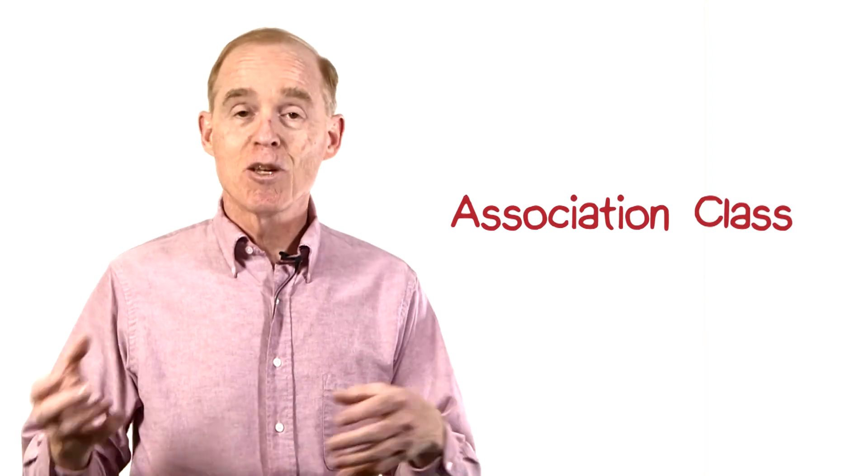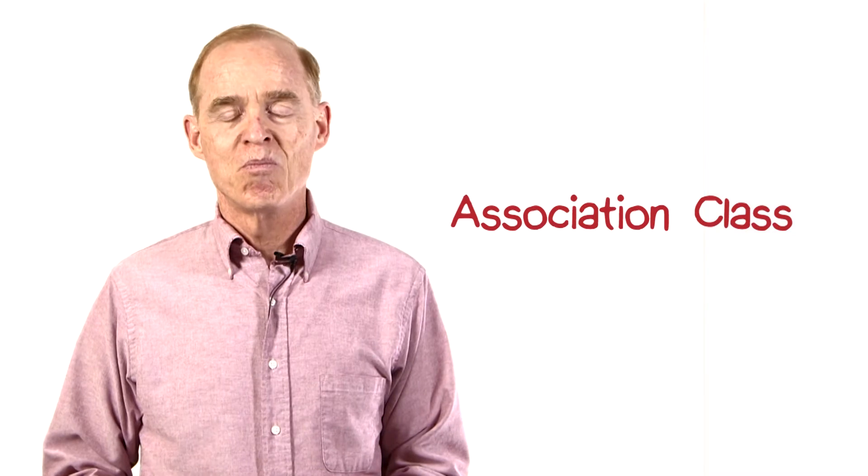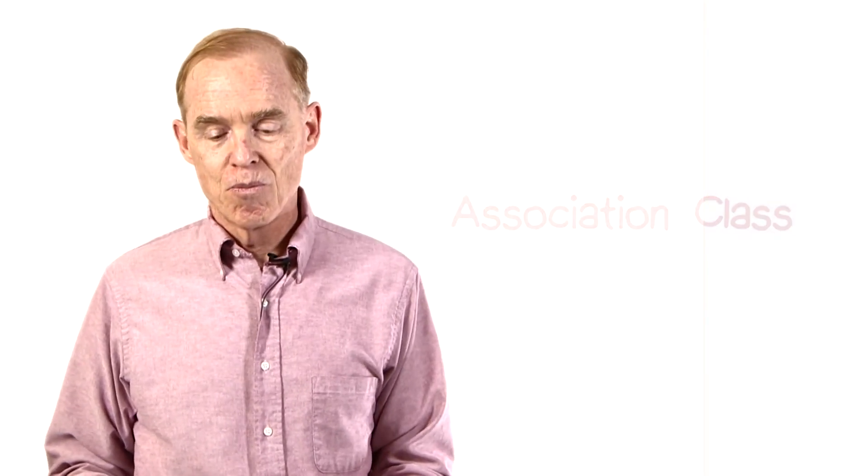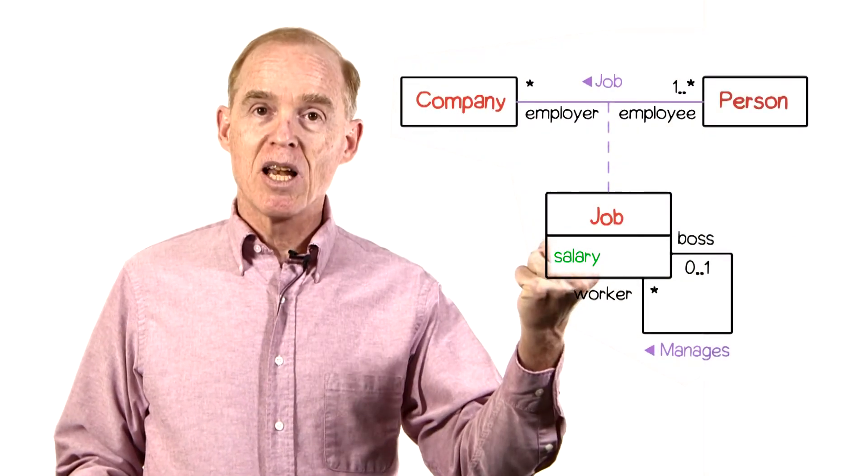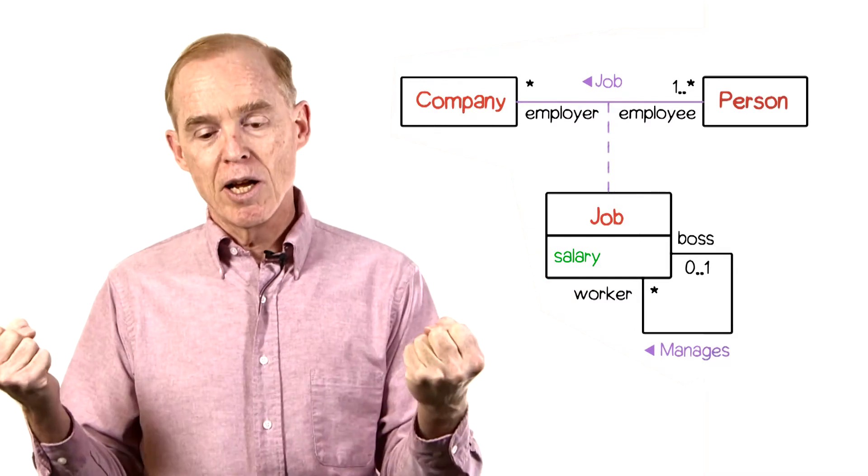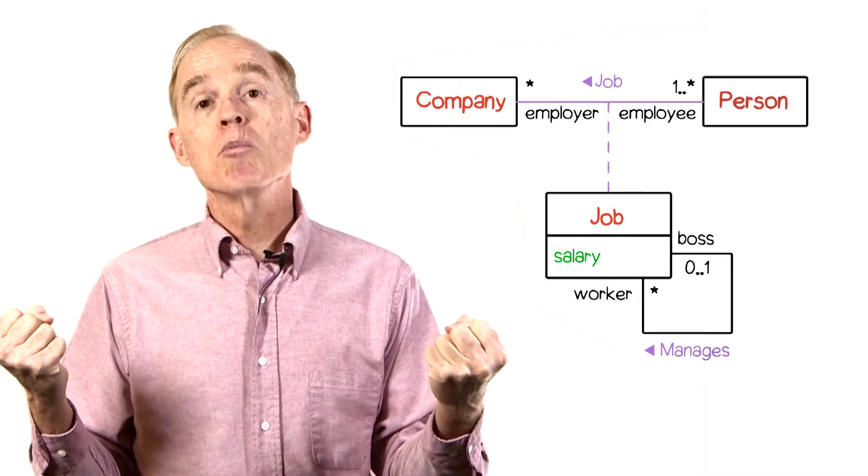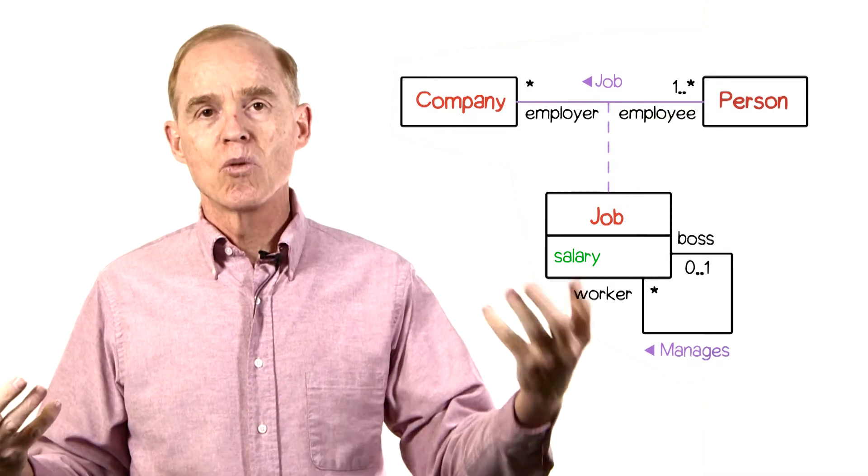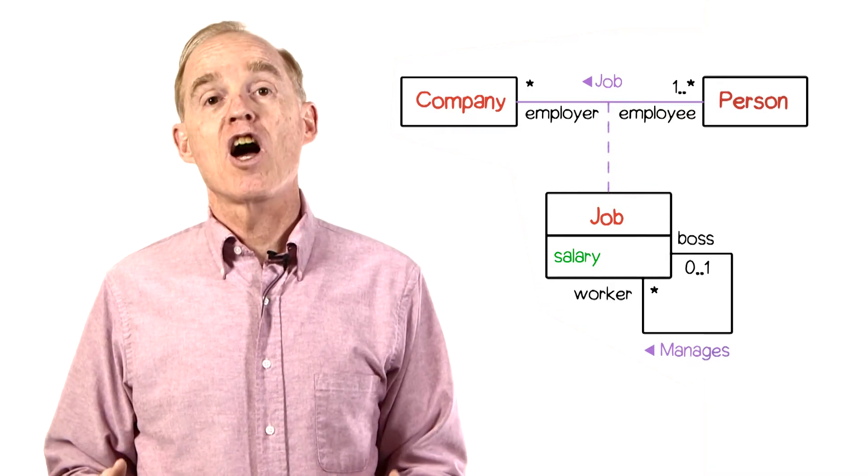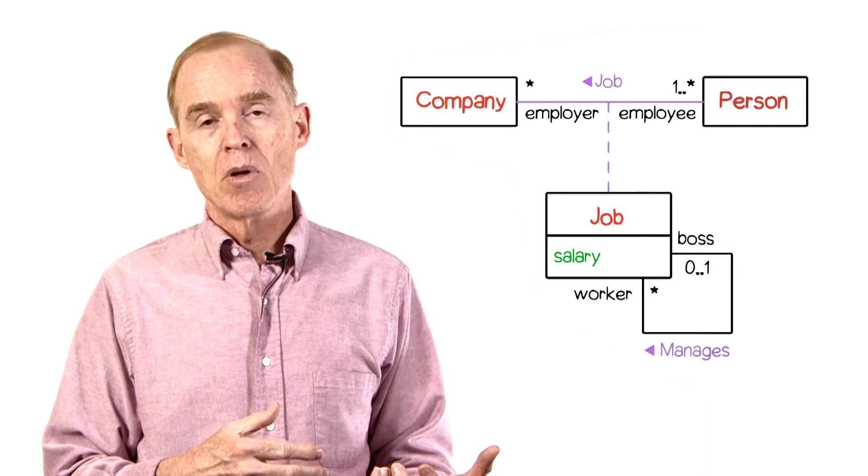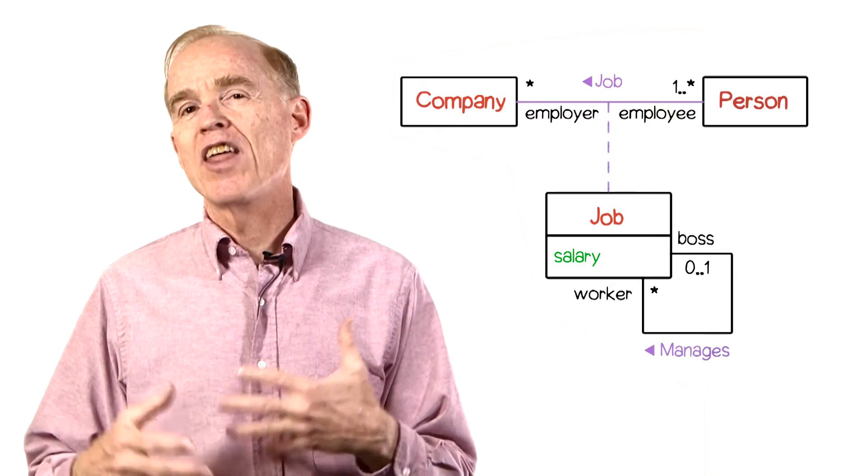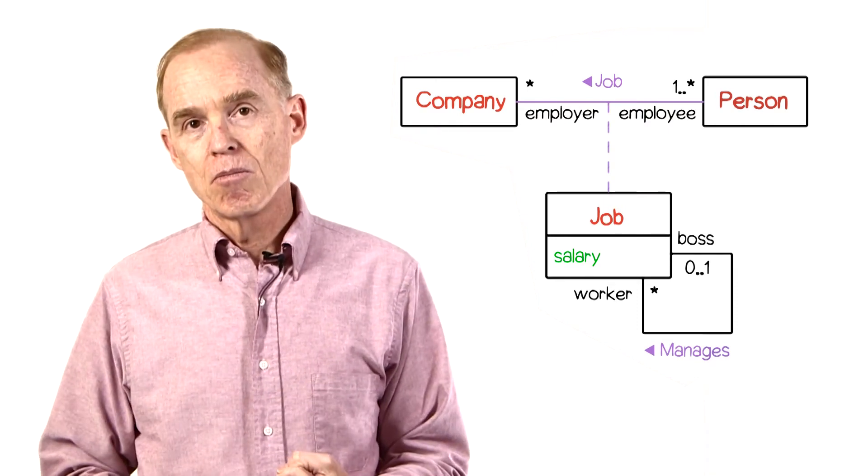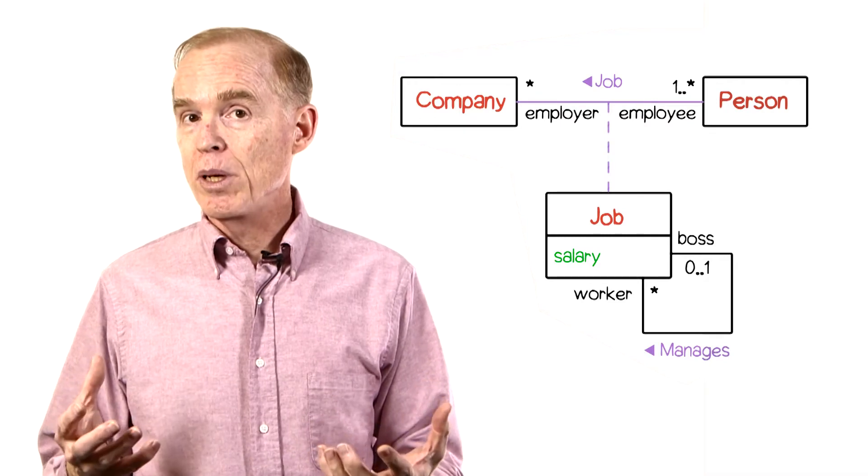Or you can think of it as a class that has some association properties. Here's an example. If we have a company class and a person class, and we have some kind of association between them, that a person has a job with the company, we might want to indicate what that person's salary is from that company.